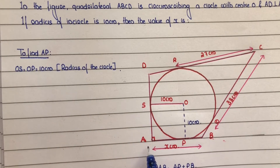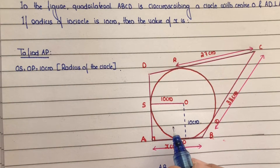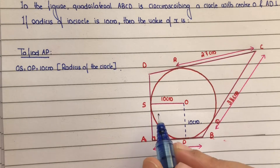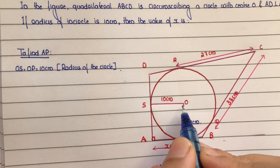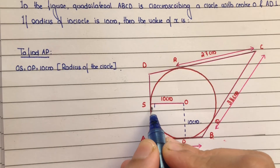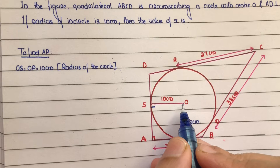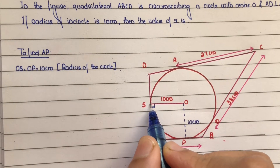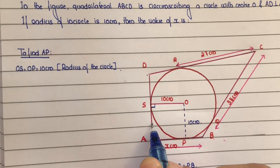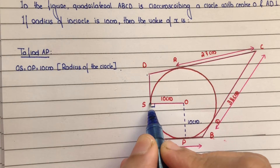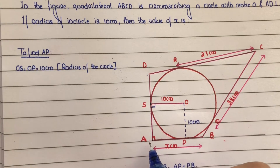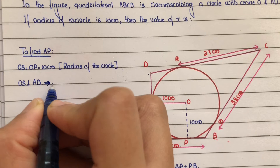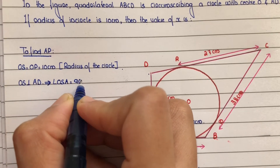We will prove that OSAP is a square. In a square inscribed this way, all sides are equal and all angles are 90 degrees. First, angle OSA equals 90 degrees. Reason: OS is the circle's radius and AD is the tangent to the circle at point S. We know that the tangent at any point of a circle is perpendicular to the radius at the point of contact. So OS is perpendicular to AD, which implies angle OSA equals 90 degrees.